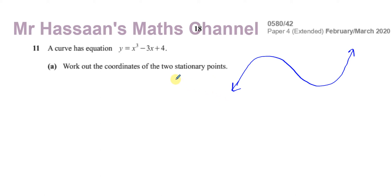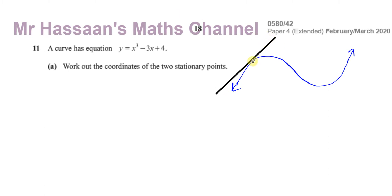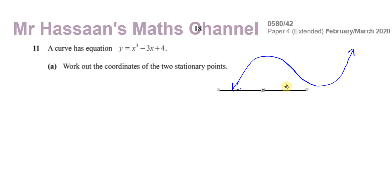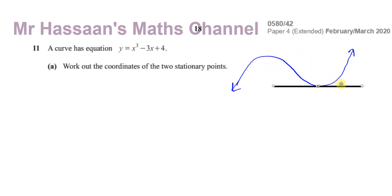The stationary point in any curve is a point where the gradient of the curve becomes zero. To find the gradient of the curve, you draw a tangent and find the gradient of that tangent. If the gradient of the curve is zero, the tangent will be horizontal. The gradient is zero at two points on the curve — those are called the stationary points, the points of zero gradient. Our objective is to find the coordinates of these two points.